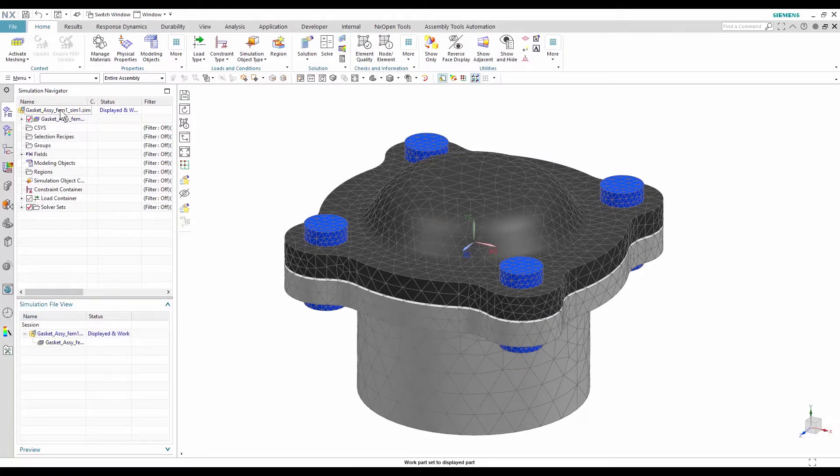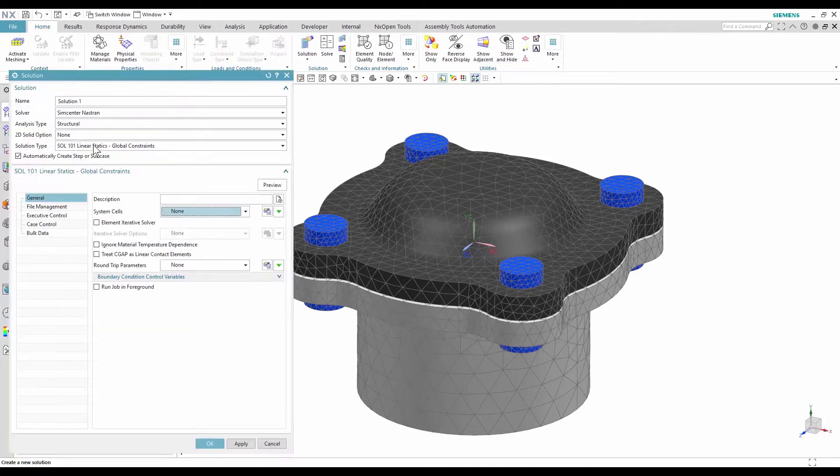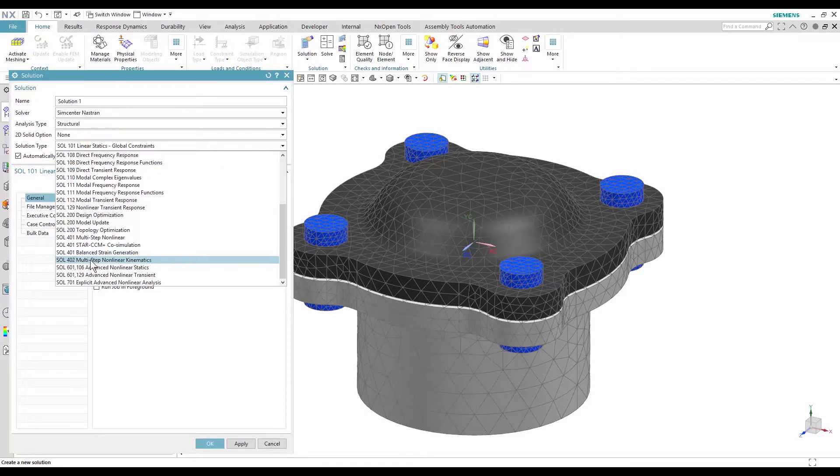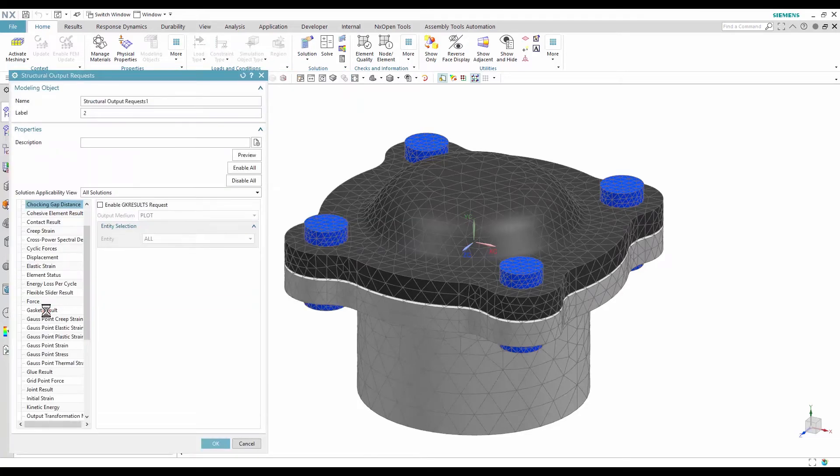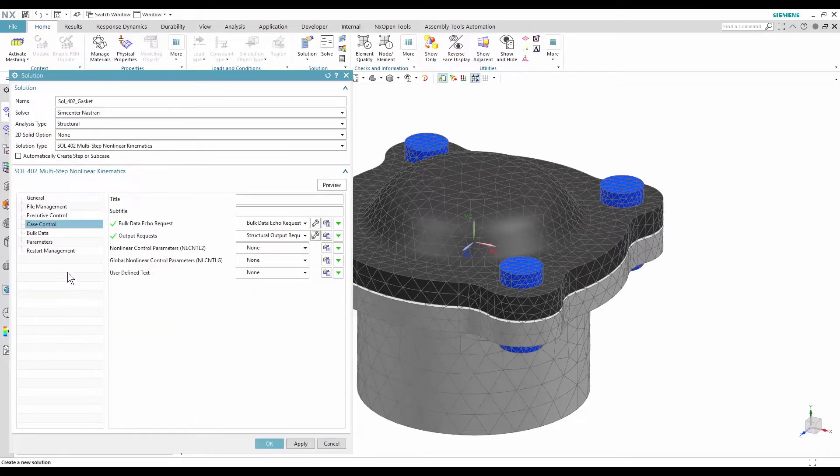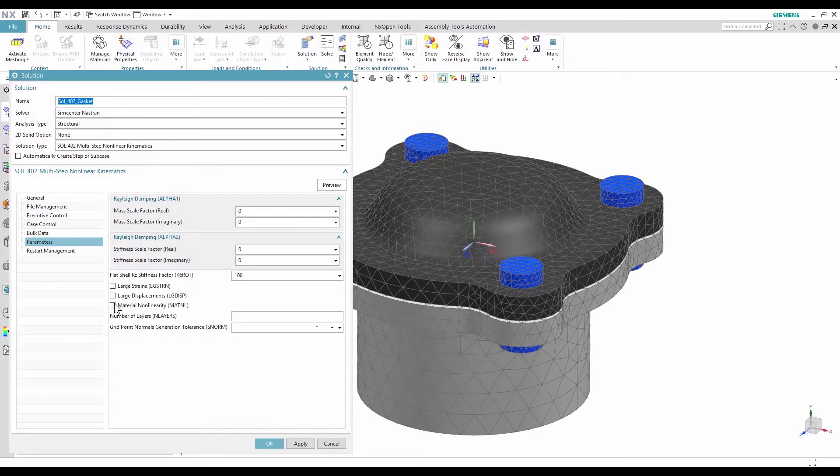In the simulation file, I create a solution 402. In the case control section, I edit the output request to obtain the gasket results. In the parameters, I enable the material non-linearity.